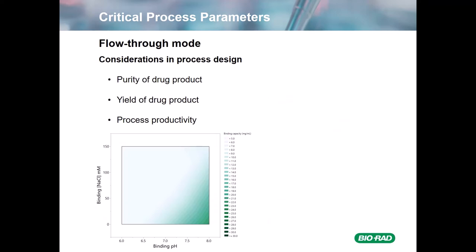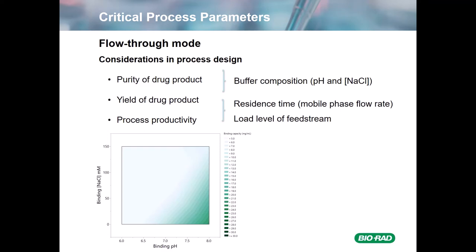Now I'm going to discuss some of the critical process parameters chosen for this study. Due to the PI of the target molecule being 9, we're going to be operating in a flow-through mode. Considerations in the process design include the purity of the drug, the yield of the drug product, and process productivity. Buffer composition — both pH and salt concentration — will have an impact on purity and yield, while residence time and load level of the feed stream will impact yield and process productivity. A contour plot done between pH 6 and 8 and 0 to 150 millimolar salt shows that binding capacity, even at best, will be roughly less than 25 mg per ml, so flow-through should be used for this process.